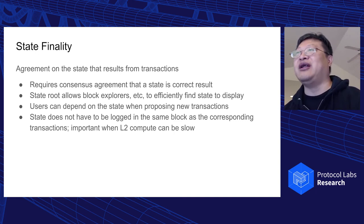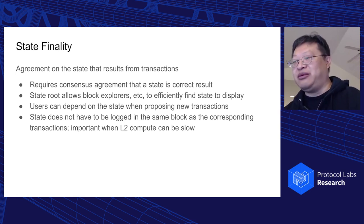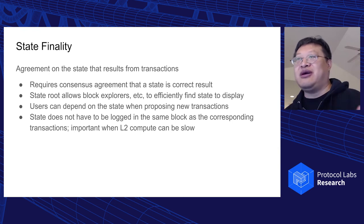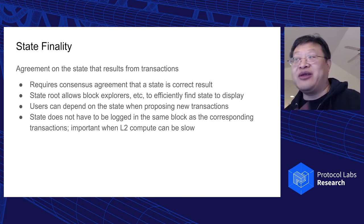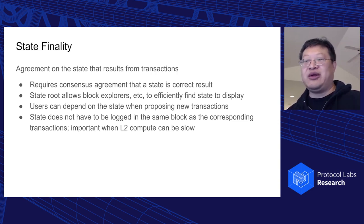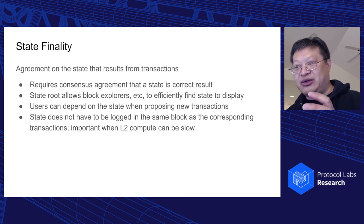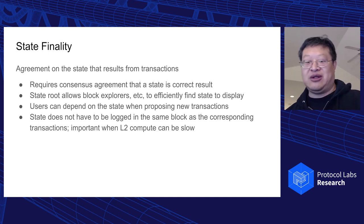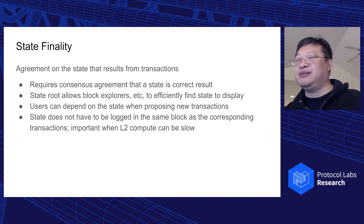State is useful, and state finality can also be a different type of message being logged. We use consensus for that too — we want to agree on the state because users really want to know what the state is rather than having to compute it themselves. They want to use block explorers and figure out what account balances are and so forth. The observation here is that, just like in optimistic rollups, state doesn't have to be logged in the same block as the transactions, and that's very important if we want to allow the VM to process large amounts of data or do anything that might be slow. When things are fast, having them be tightly coupled is fine.